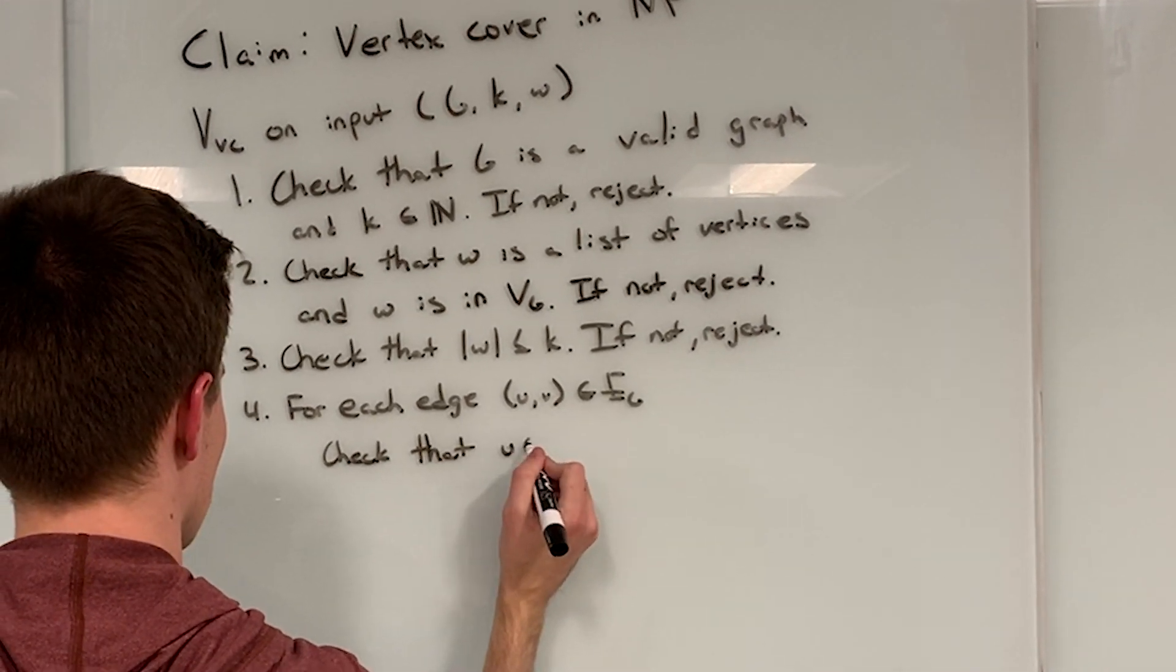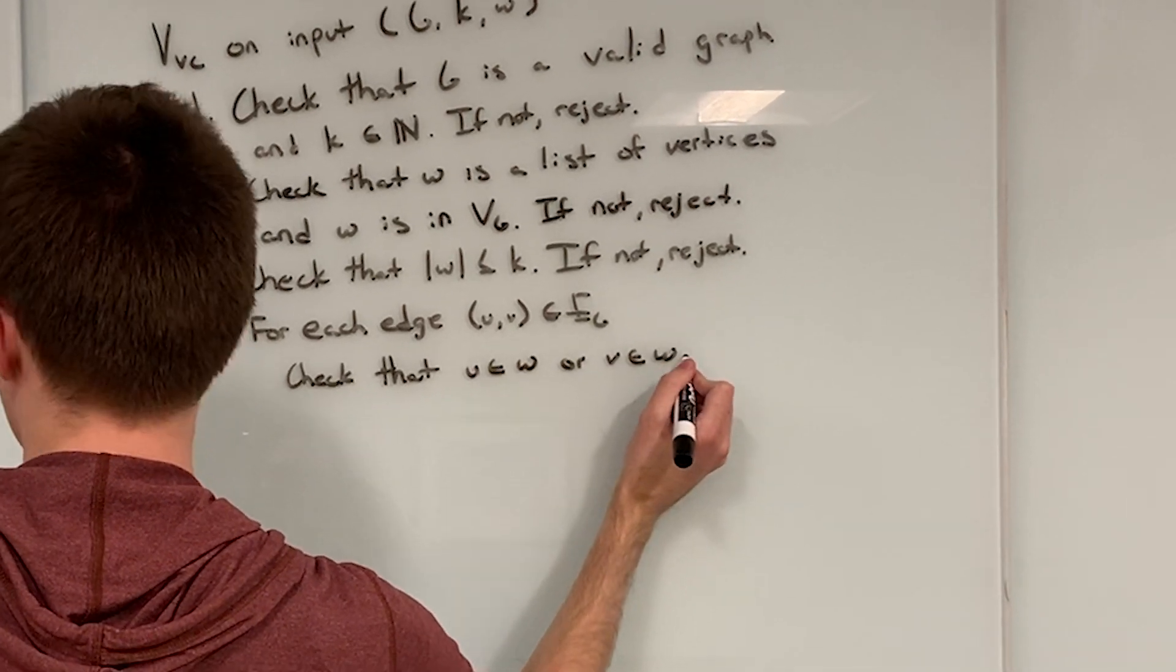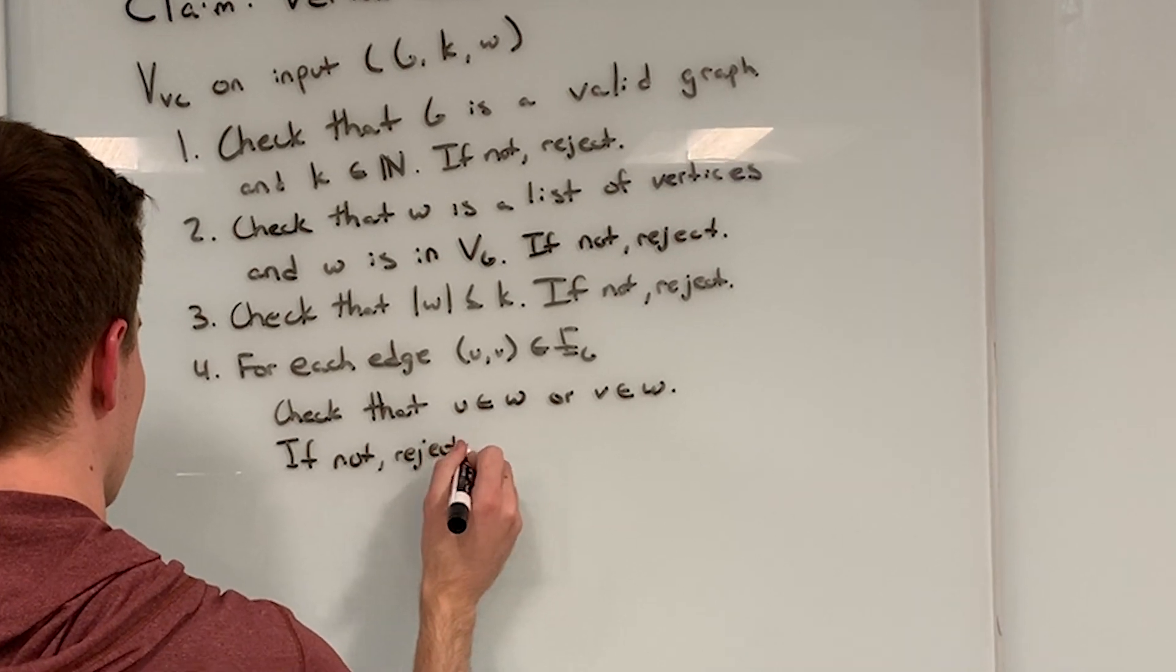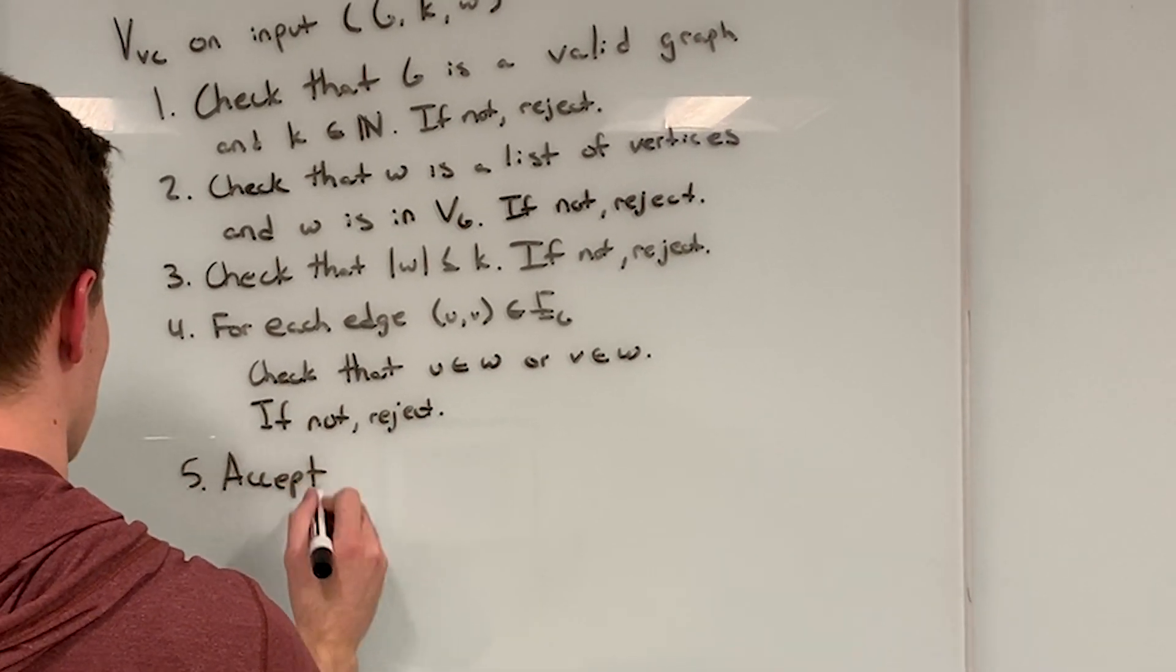Finally, if all of the above are true, we accept, asserting that W is a full vertex covering of the graph G, and K is greater than or equal to the size of the vertices mentioned.